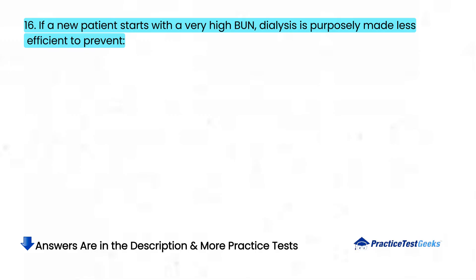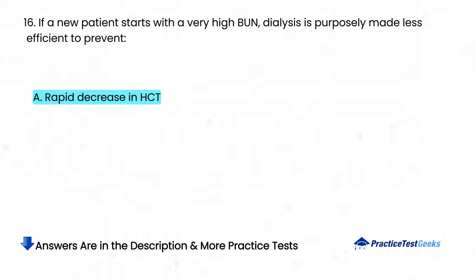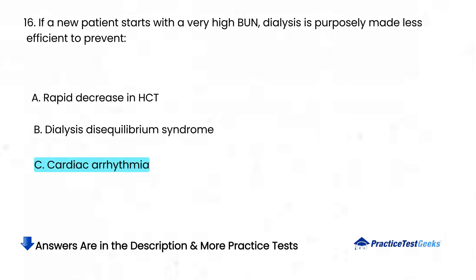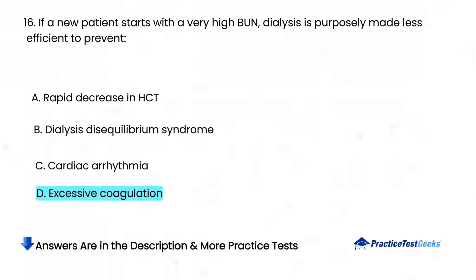If a new patient starts with a very high BUN, dialysis is purposely made less efficient to prevent: A. Rapid decrease in HCT. B. Dialysis disequilibrium syndrome. C. Cardiac arrhythmia. D. Excessive coagulation.